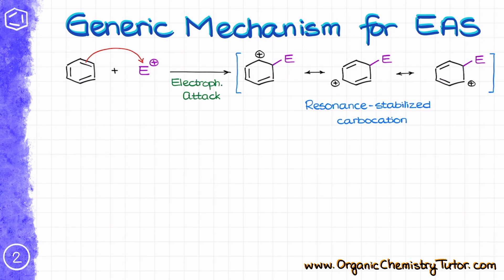Back to our resonance stabilized carbocation — we occasionally call this intermediate a sigma complex. The sigma complex is an outdated term but it was very popular in the middle of the last century and you can still see it in some textbooks. Now, to make this carbocation we had to break the aromatic ring, and thus we lost the stability that comes with aromaticity.